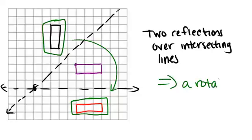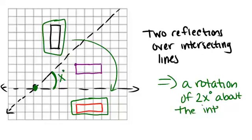It's a rotation centered at the point where the two lines intersected. The rotation is, in this case, 90 degrees. But in general, if this is x degrees, it's going to be a rotation of 2x degrees about the intersection of the two lines of reflection.